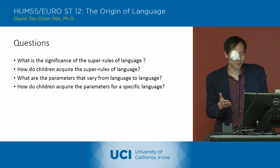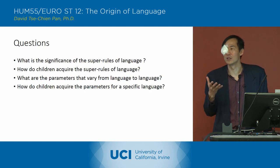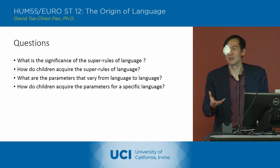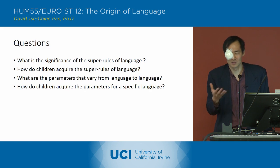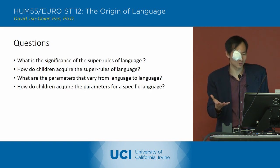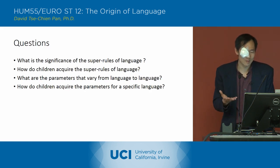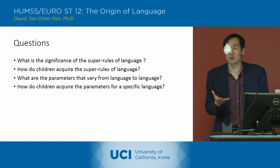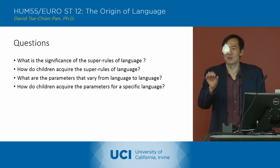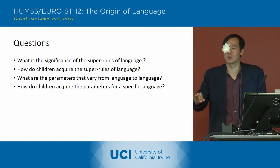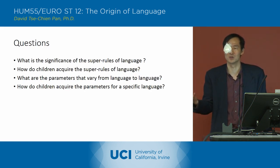How do children acquire the super rules of language? They have them innately, in a sort of language module — they're essentially born with these super rules. And what are the parameters that vary from language to language? It's head-first or head-last, and prepositions versus postpositions.